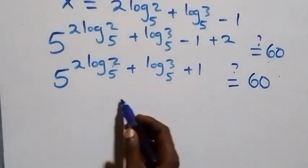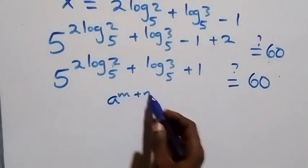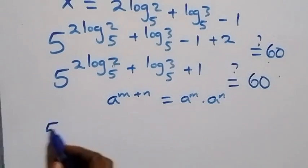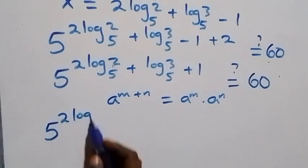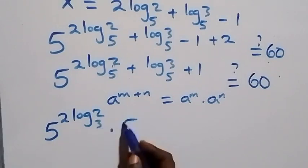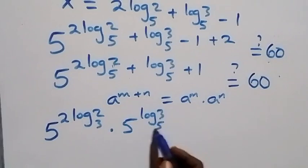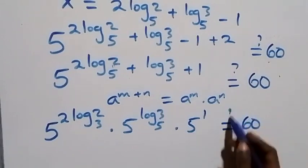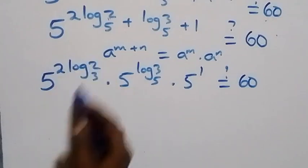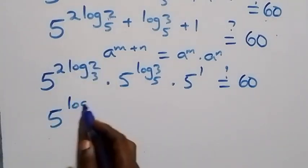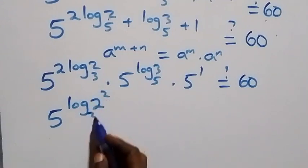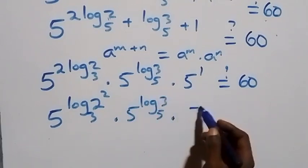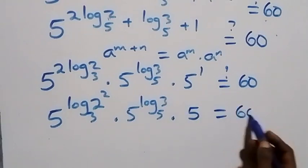We apply the rule a raised to power (m plus n) equals a raised to power m times a raised to power n. This becomes 5 raised to power (2 log₅2) times 5 raised to power (log₅3) times 5 raised to power 1. We then reverse the power law: 5 raised to power (log₅2²) times 5 raised to power (log₅3) times 5 equals 60.